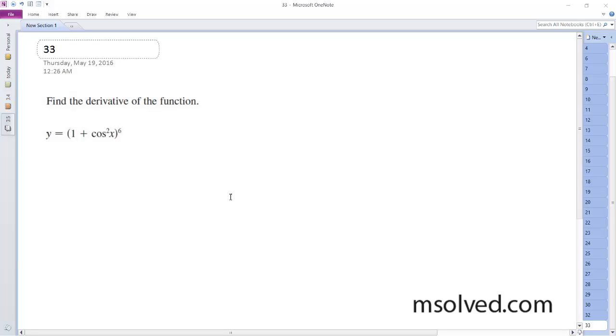All right, the derivative. So it's going to be y prime is equal to 6 times the derivative of what's inside, which is actually quite a bit here.